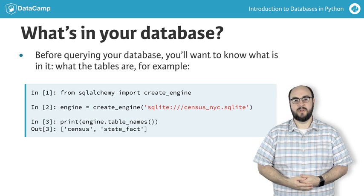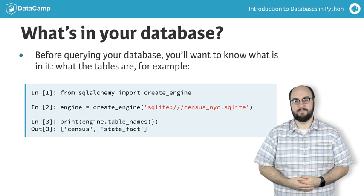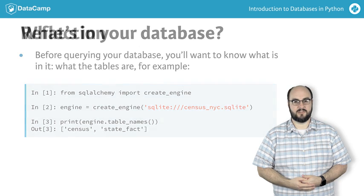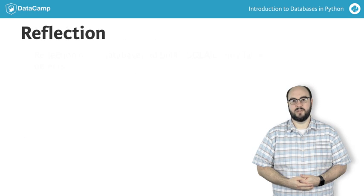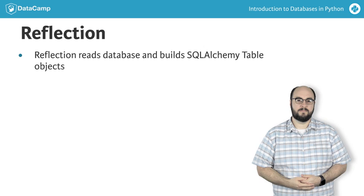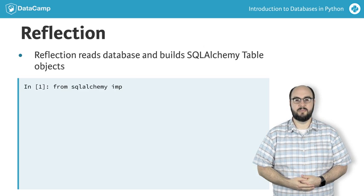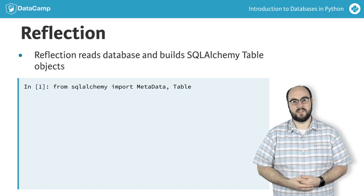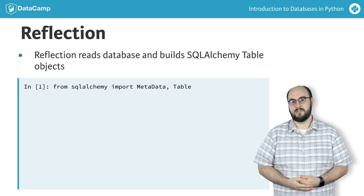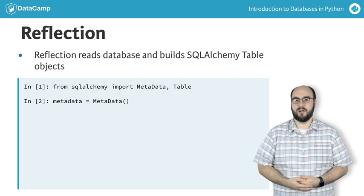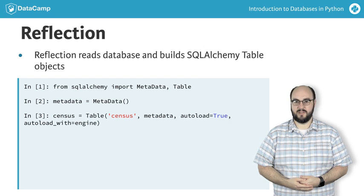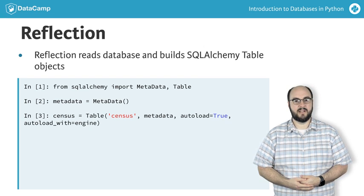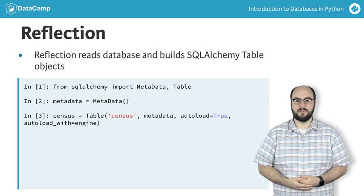Once we know what table we want to work on, we need a way to access that table with Python. To do that, we're going to use a handy process called reflection, which reads the database and builds a table object that we can use in our code. We begin by importing the metadata and table objects needed for reflection. The metadata object is a catalog that stores database information such as tables, so that we don't have to keep looking them up. To reflect the table, we initialize a metadata object, then use the SQLAlchemy table object and provide the table name we got earlier from the tableNames method. We also supply our metadata instance and instruct it to auto-load the table using the engine.